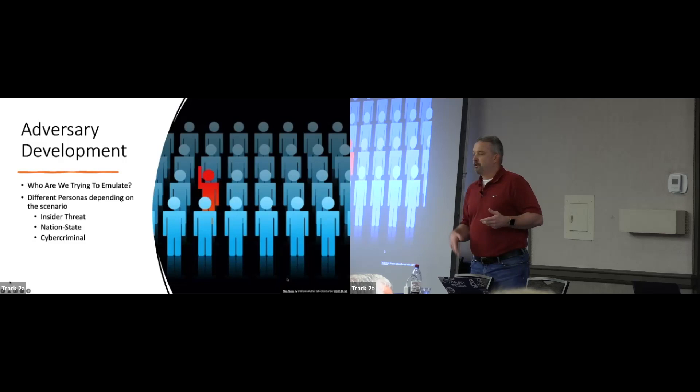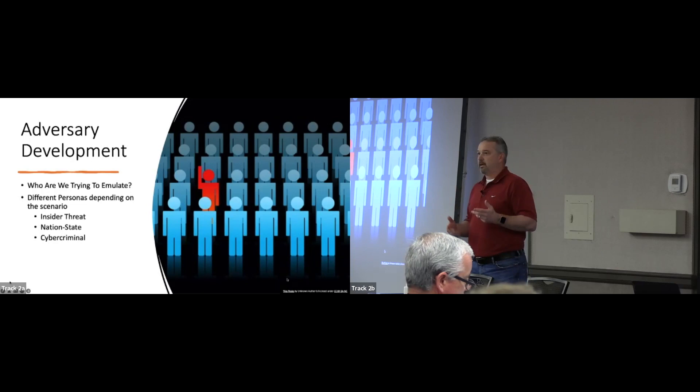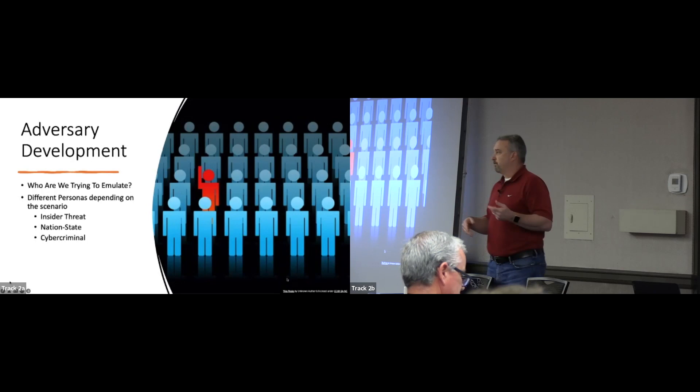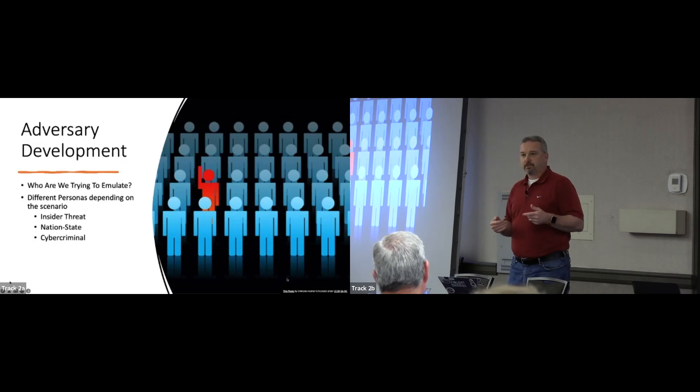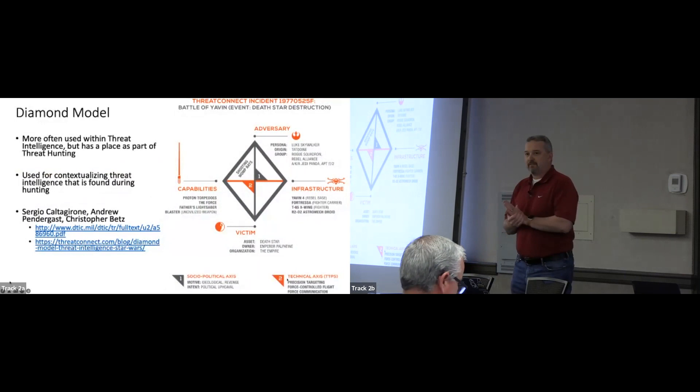The adversary can be different personas depending upon the scenario. If you want to emulate an insider threat, you've got to come up with that insider threat for your organization. If you want to look at nation state or cyber criminal, there are different ways to emulate the adversary — you just need to start with that persona, figure out what it is, and go from there. What I'm going to talk about is the nation state piece, which is what I've been focusing on over the past couple of years.